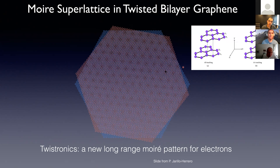What your eyes are picking out — and this will come up in my talk many times — is the A and B sublattice of graphene. They're not equivalent, as you know. What your eyes are picking up in the middle of this moiré pattern is what we call AA stacking. At very small angles, the AA sublattice is stacked on top of the A sublattice, and this transitions periodically going from A sublattice being on the B sublattice — a gradual transition.